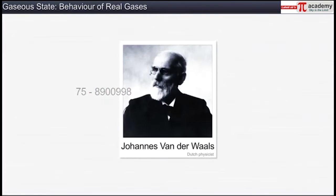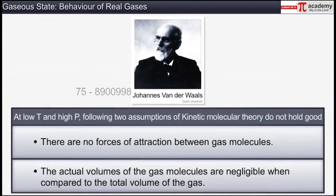Dutch physicist Johannes van der Waals gave an explanation for these deviations and modified the ideal gas equation in order to make it applicable to real gases. He observed that at low temperature and high pressure, the following two assumptions of the kinetic molecular theory do not hold good for real gases.